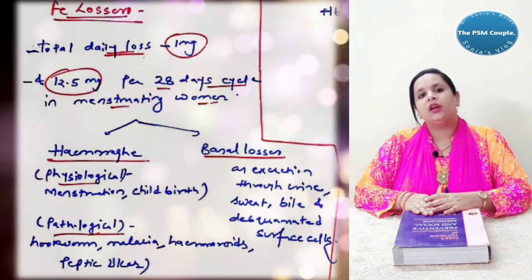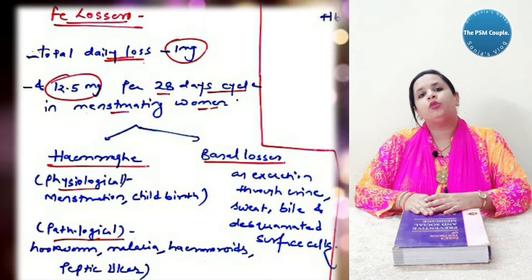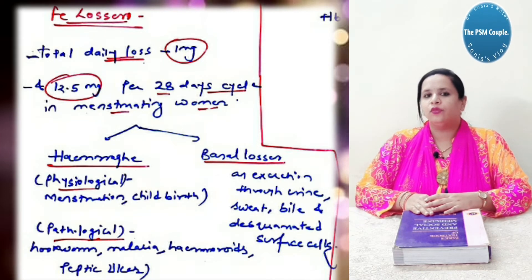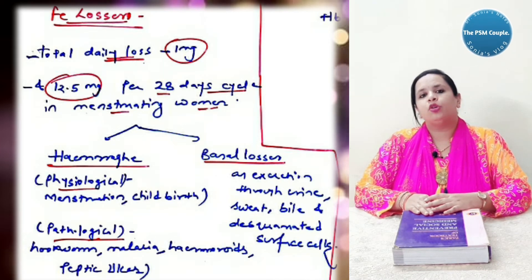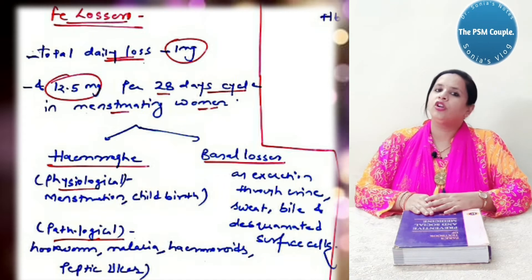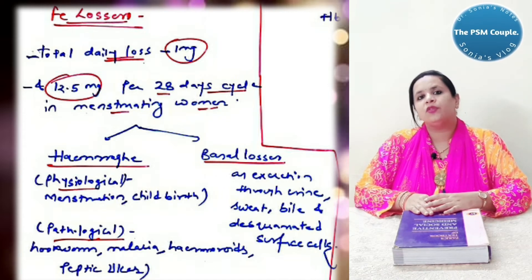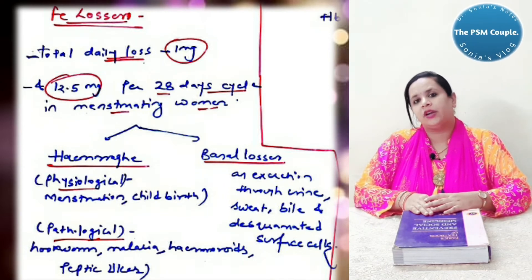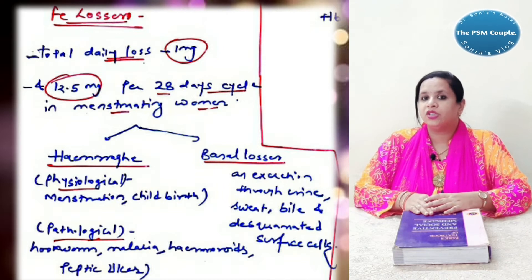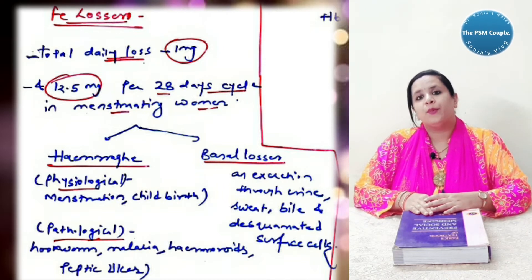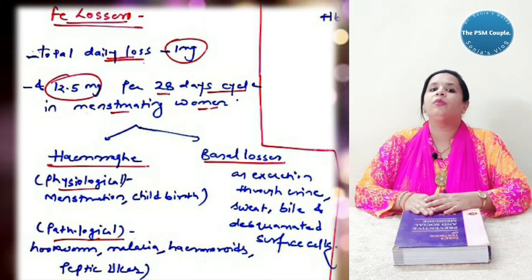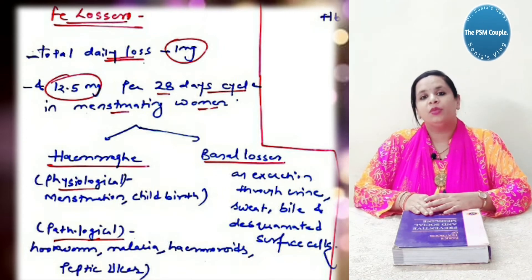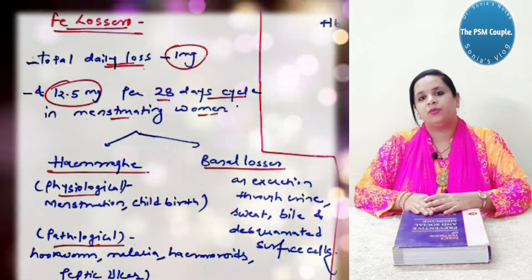Regarding iron losses: total daily losses are 1 mg, and 12.5 mg per 28-day cycle in the menstruating woman. There are three kinds of iron loss: hemorrhage loss (physiological — menstruation every month and childbirth), basal loss (excretion through urine, sweat, bile and desquamated surface cells), and pathological loss (hookworm infestation, peptic ulcer, malaria and hemorrhage).